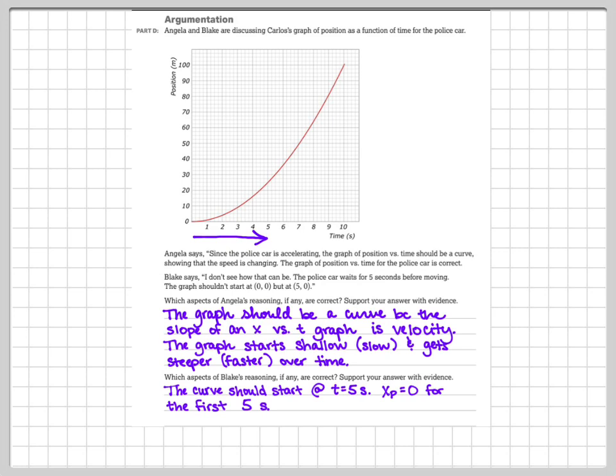Blake makes a nitpicky but valid point: the graph is supposed to be shifted to the right by five seconds. By shifted to the right, we don't mean a full smiley-face parabola — it should be zero for the first five seconds and then swoop upwards in a parabolic path.